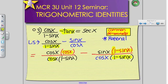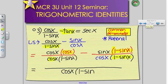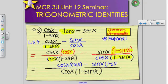Now we can go ahead and put everything under a common denominator of cosine x times 1 minus sine x. And now what I'm going to do with my denominator, I'm going to move and rewrite everything so that it's all over a common denominator. So I have cosine x times cosine x minus sine x times 1 minus sine x.